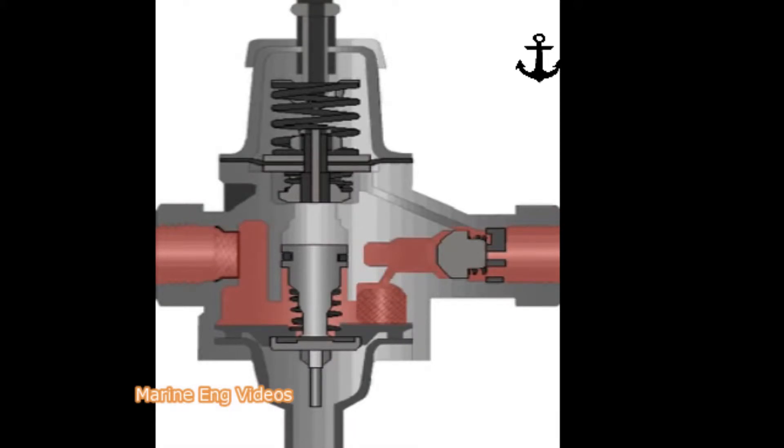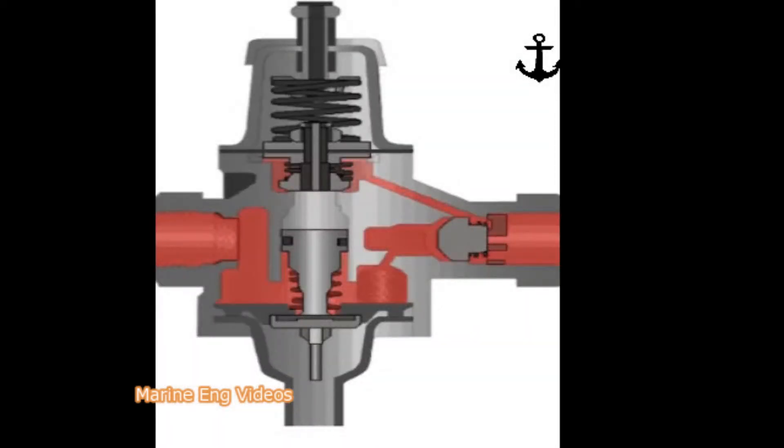Simultaneously, the air pressure beyond the non-return valve is communicated below the diaphragm, which moves the diaphragm up against the pressure setting spring load. When the set pressure is reached,